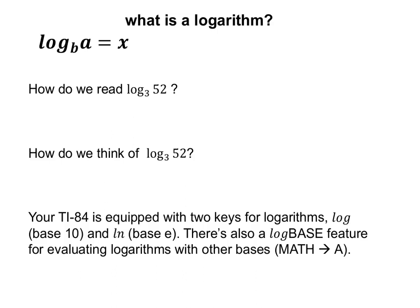We've touched on this just very briefly in one of the early days of class. Here's what a logarithm looks like. We've got the notation 'log', meaning it's a logarithm. It has a little number written as a subscript called the base of the logarithm, just like a base of an exponential. Then there's something that follows — usually in parentheses — called the argument of the logarithm. A logarithm outputs some type of number, just like a function output.